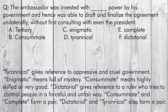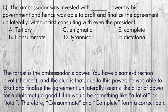Tyrannical refers to an oppressive and cruel government. Enigmatic means full of mystery. Consummate means highly skilled or very good. Dictatorial refers to a ruler who tries to control people in a forceful and unfair way. Consummate and complete form a pair; dictatorial and tyrannical also form a pair.